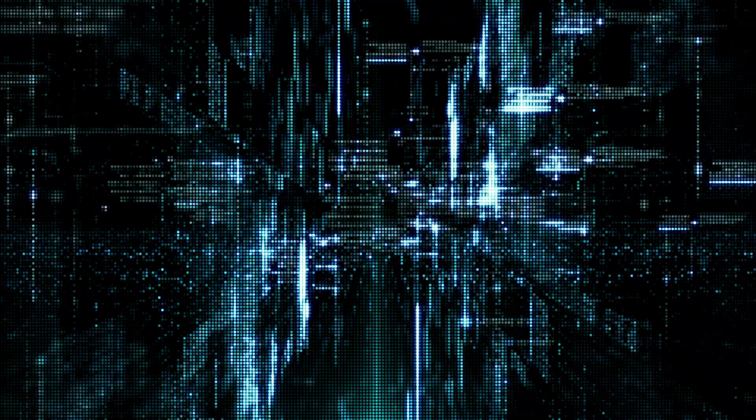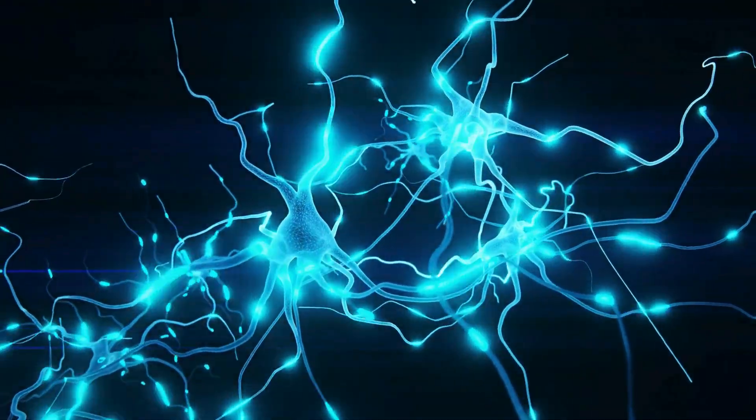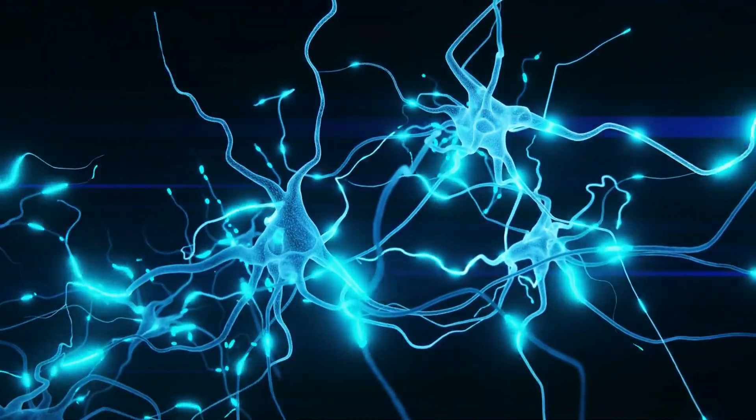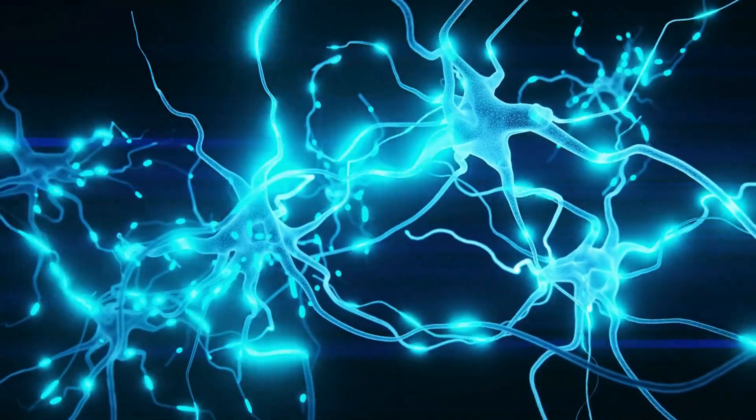When we think, feel, or dream, our neural networks create dynamic, interconnected patterns. Could these patterns align with the higher-dimensional symmetry of E8, bridging the gap between the physical and the mental?